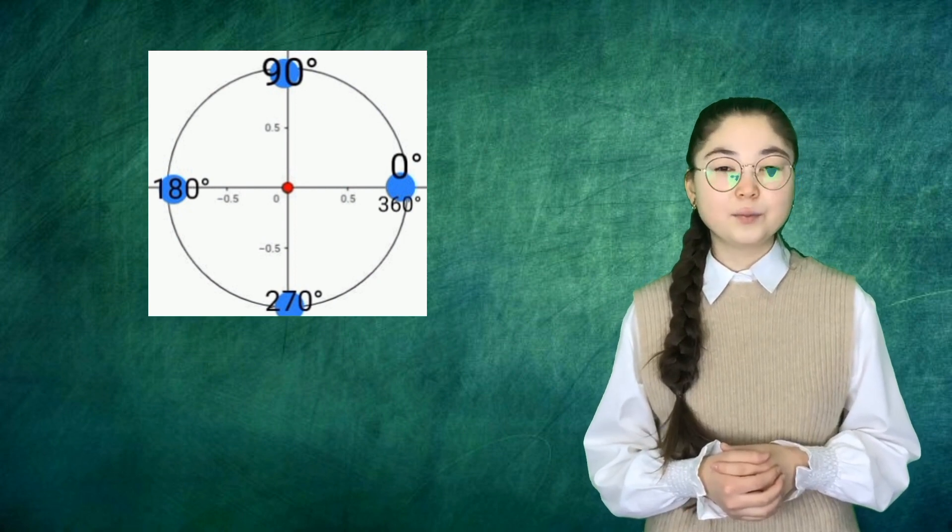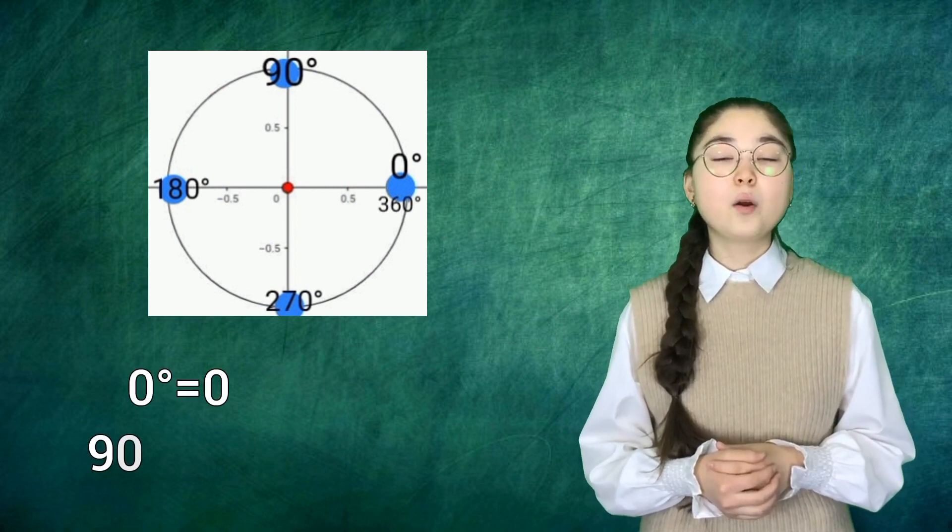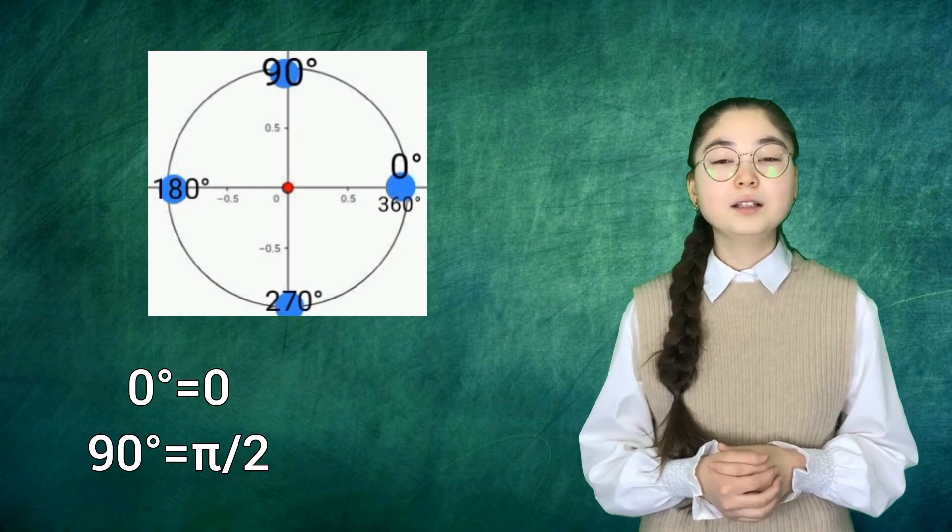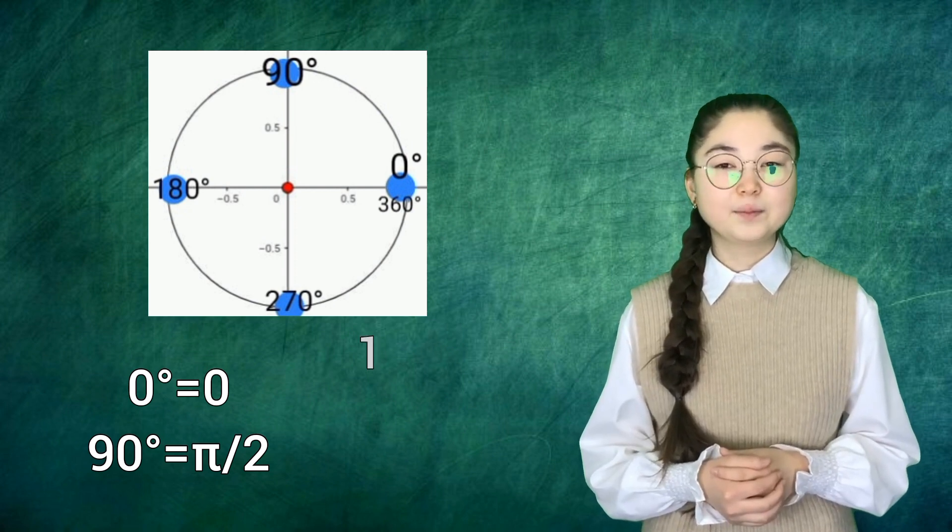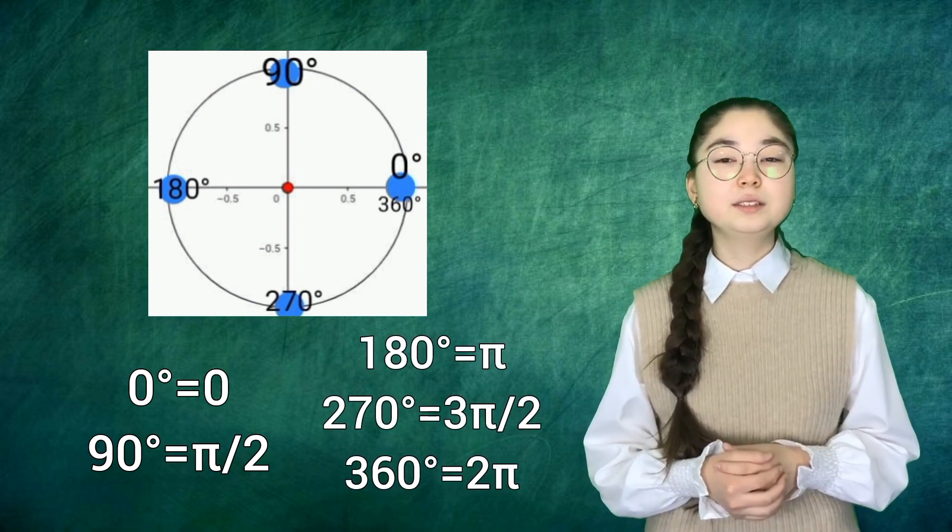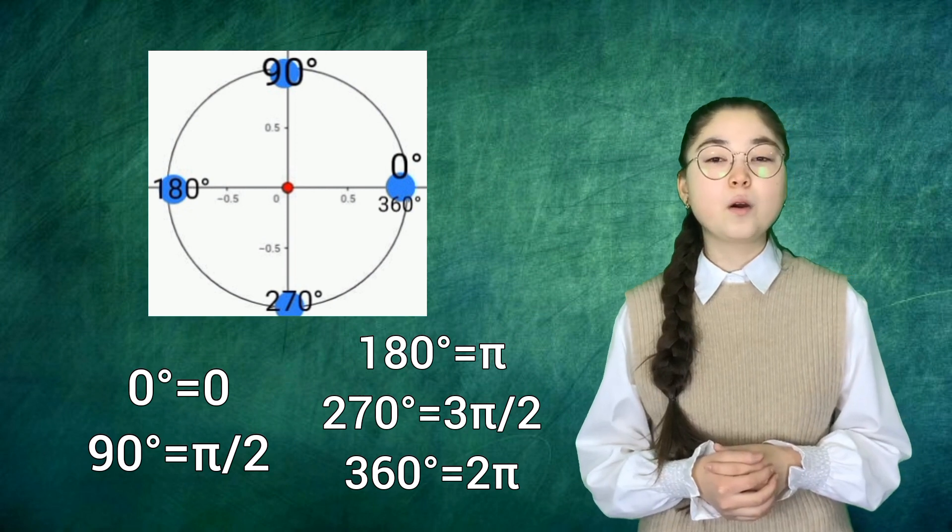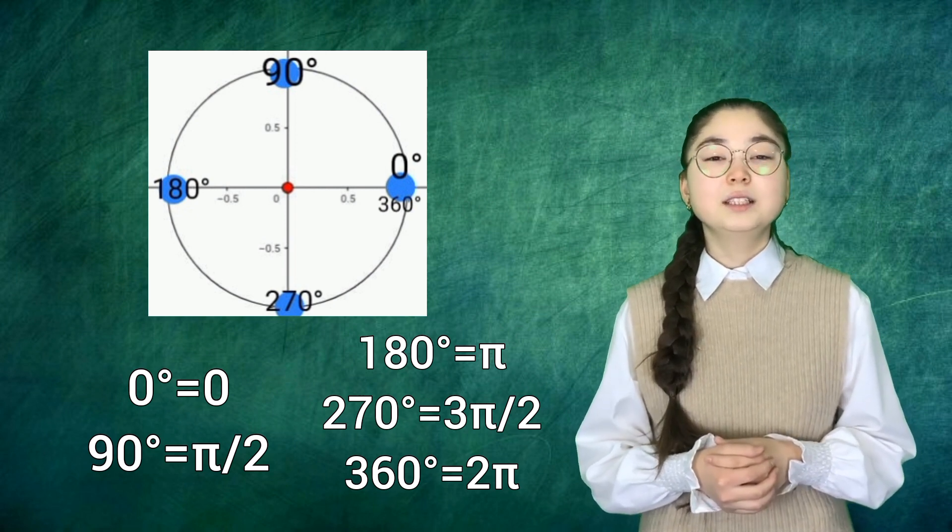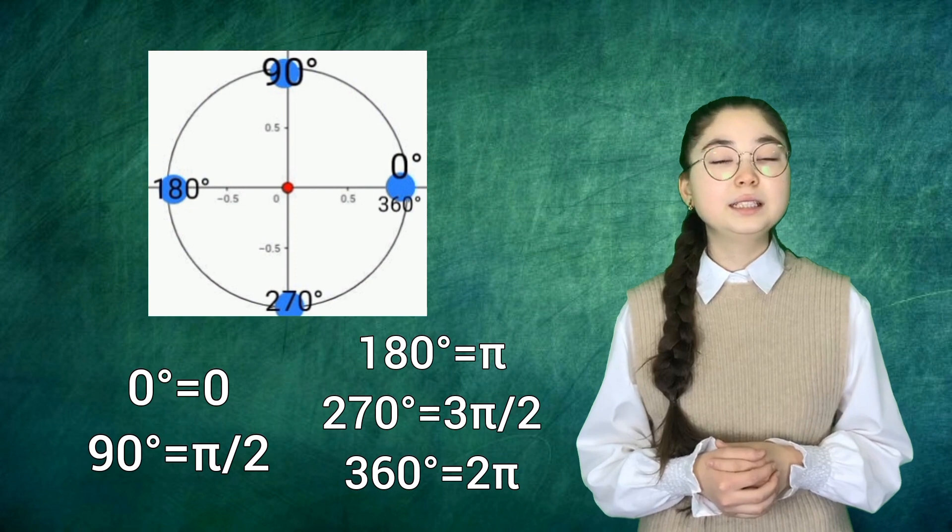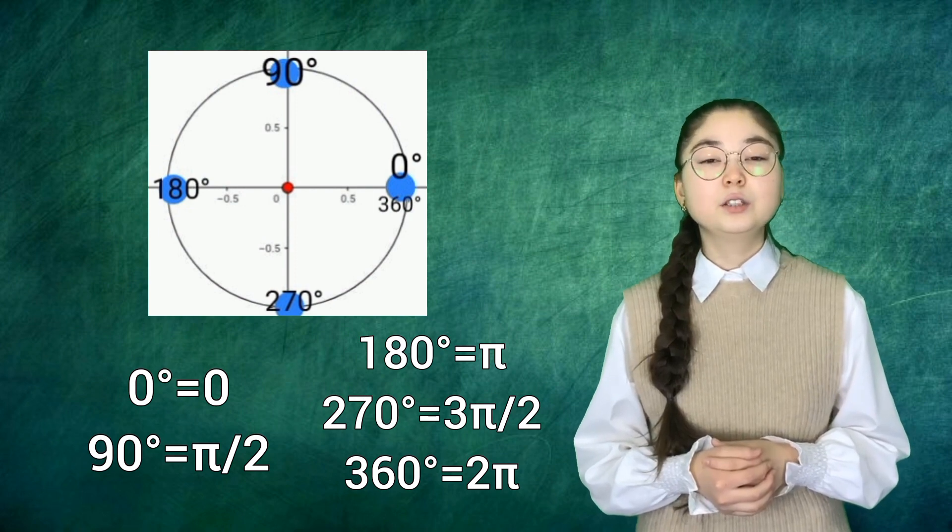So in radians, 0 degrees equals 0, 90 degrees is π over 2, 180 degrees is π, 270 degrees is 3π over 2, and 360 degrees equals 2π.